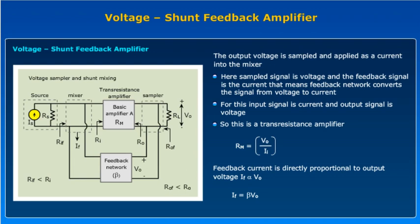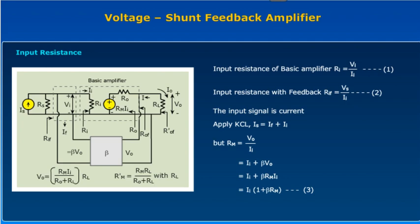The output voltage is sampled and applied as a current into the mixer. The sample signal is the voltage and the feedback signal is the current, meaning the feedback network converts the signal from voltage to current. The input signal is the current and the output signal is the voltage, so this is a transresistance amplifier. The transfer gain is defined as RM equal to V0 by II. The basic amplifier is replaced with its equivalent circuit, where the input is replaced with resistance Ri and output is a voltage source RM·II.